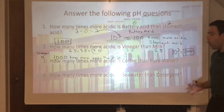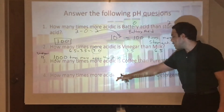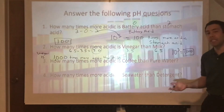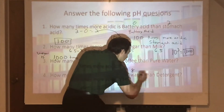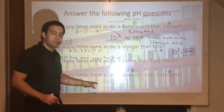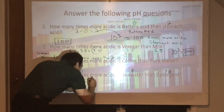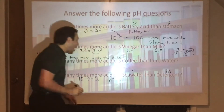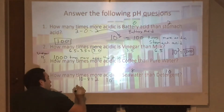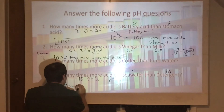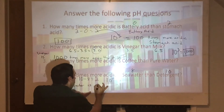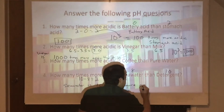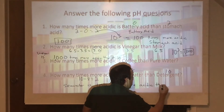This also works with bases. How many times more acidic is seawater, a base with a pH of 8, than detergent, a base with a pH of 10? We do high number minus low number: 10 minus 8 equals 2. So 10 to the second power is 100 — seawater is one hundred times more acidic than detergent.